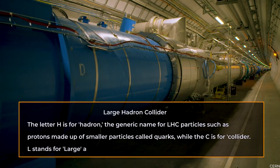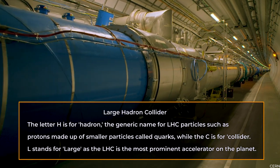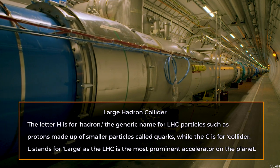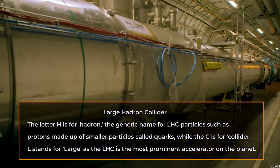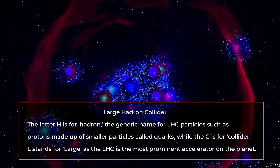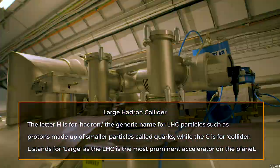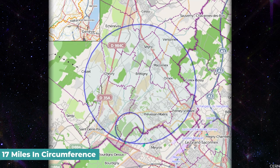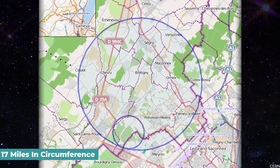Let's start by analyzing how the Large Hadron Collider's name originated. The letter H is for hadron, the generic name for LHC particles such as protons made up of smaller particles called quarks, while the C is for collider. L stands for large, as the LHC is the most prominent accelerator on the planet, occupying a circular tunnel nearly 17 miles in circumference.